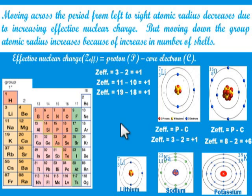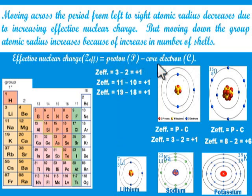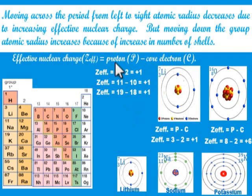Now let's look at another aspect. Effective nuclear charge is the net charge the valence electron experiences. The formula for it is: protons minus core electrons. Core electrons are the inner electrons, while outer electrons are called valence electrons. Remember also that the number of protons is the same as the atomic number, and the number of protons equals the number of electrons in a neutral atom.